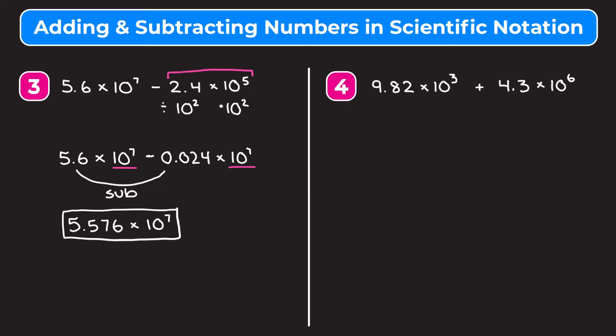Let's jump into example 4, which is 9.82 times 10 to the third plus 4.3 times 10 to the sixth. I want to change the smaller exponent into the bigger exponent — so I want to change 10 to the third into 10 to the sixth. I have to multiply 10 to the third by 10 to the third, which means I have to divide 9.82 by 10 to the third. When you divide by positive powers of 10, you move the decimal point to the left however many times the exponent is, so we get 0.00982.